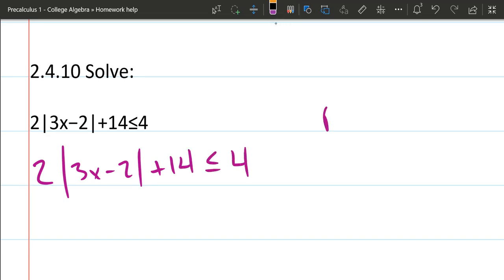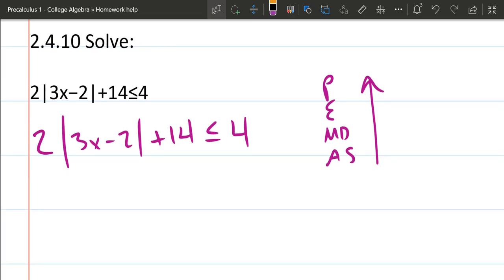When in doubt, just remember PEMDAS. You're going to go up if you're not sure what to perform first. So we're going to get rid of the +14 by subtracting 14 on both sides, and we get 4 minus 14, which is negative 10.